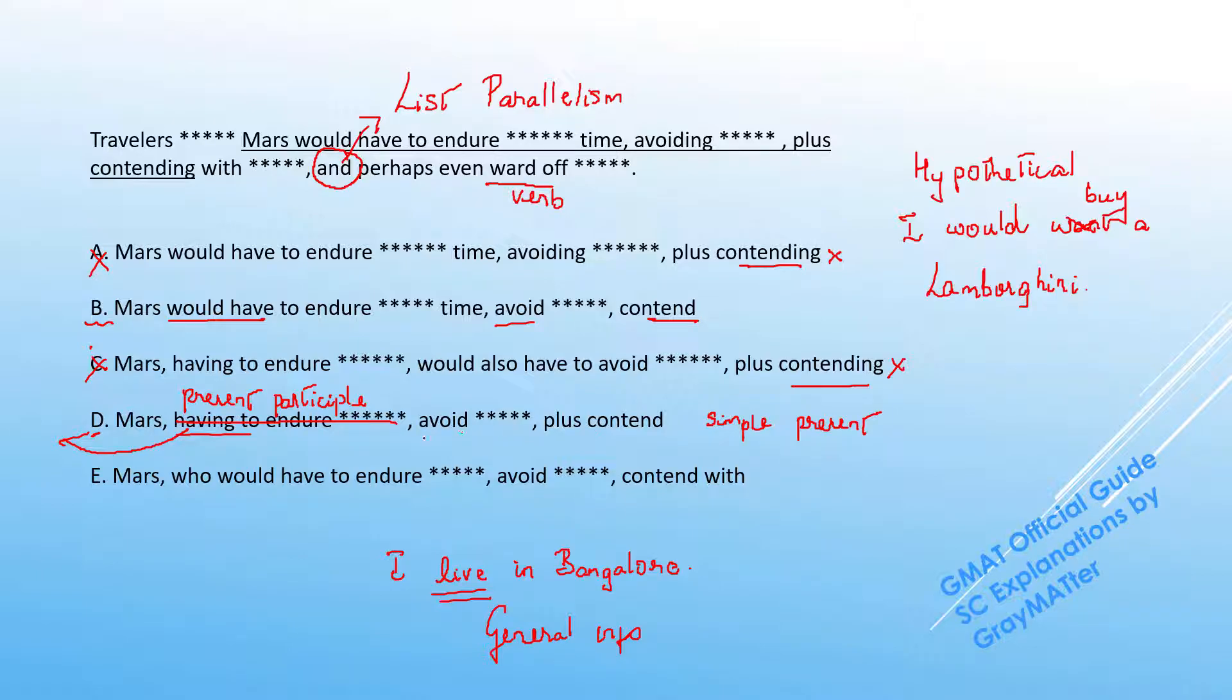But if I present it as general information in the form of 'avoid, contend', I'm stating that they already do that. If you look at E, E has the same mistake because now we have travelers to Mars who would have to endure.